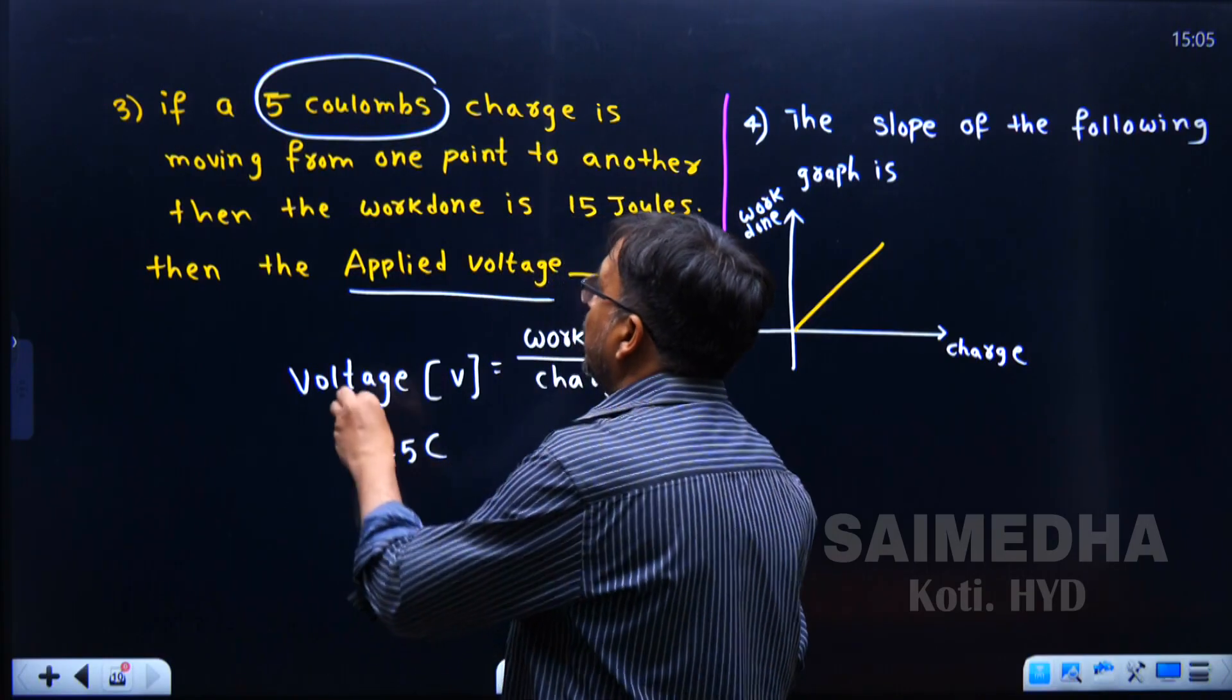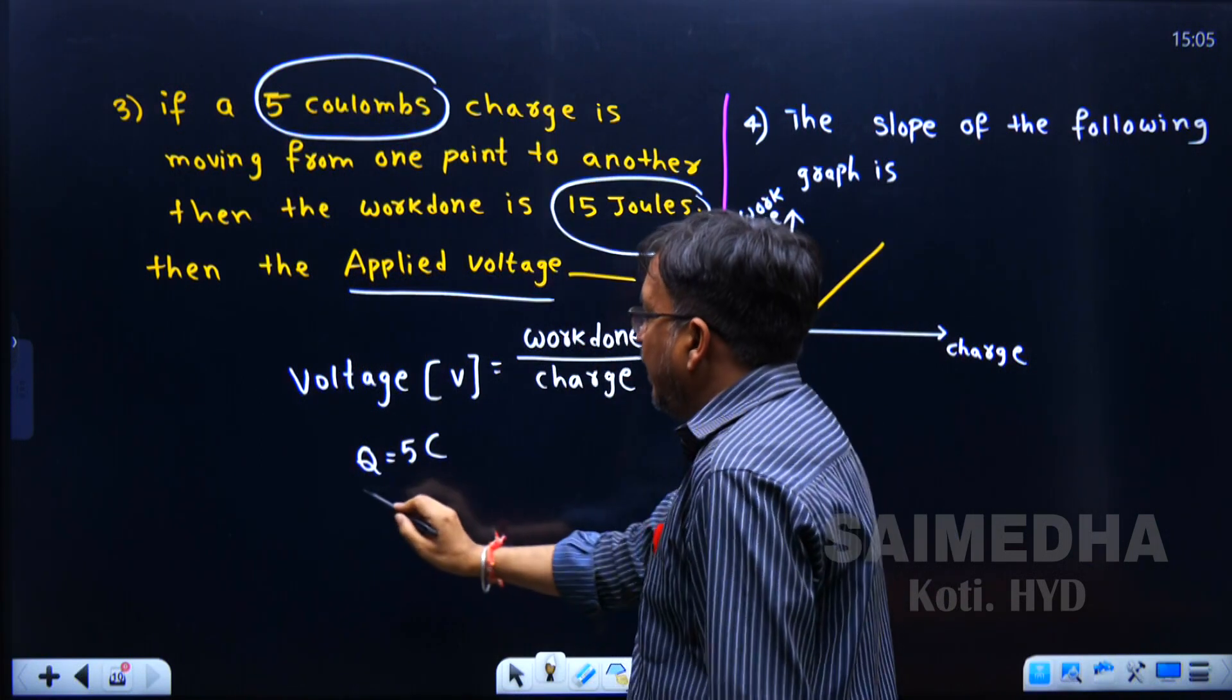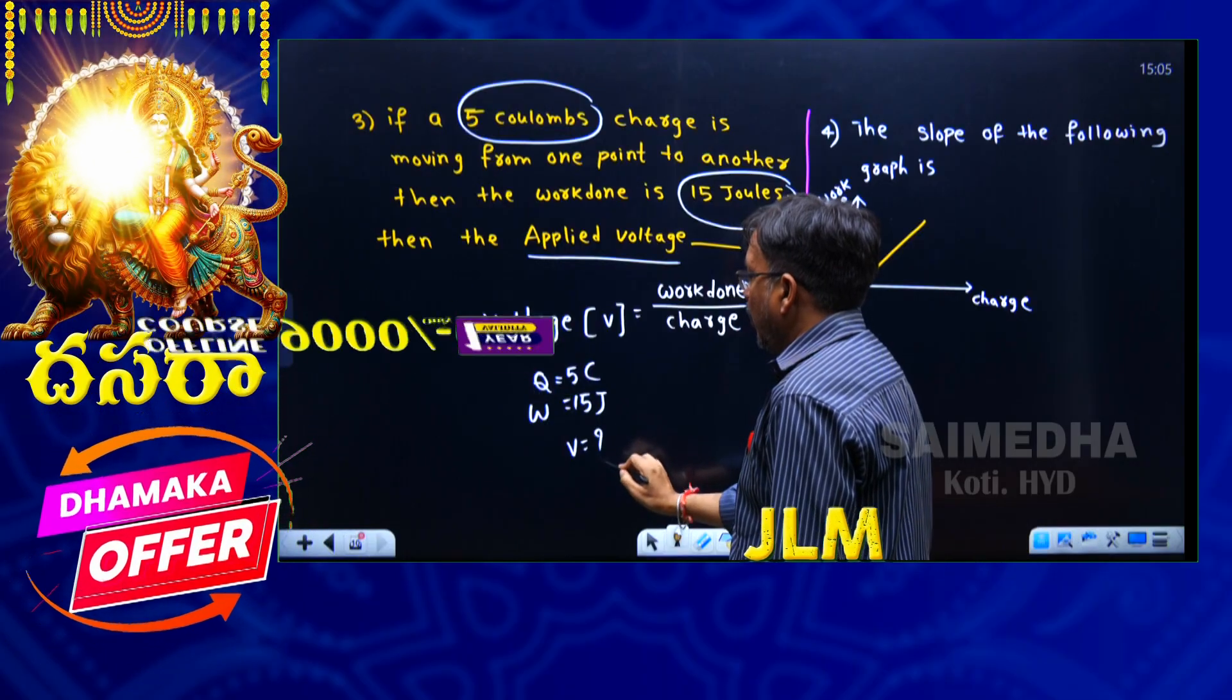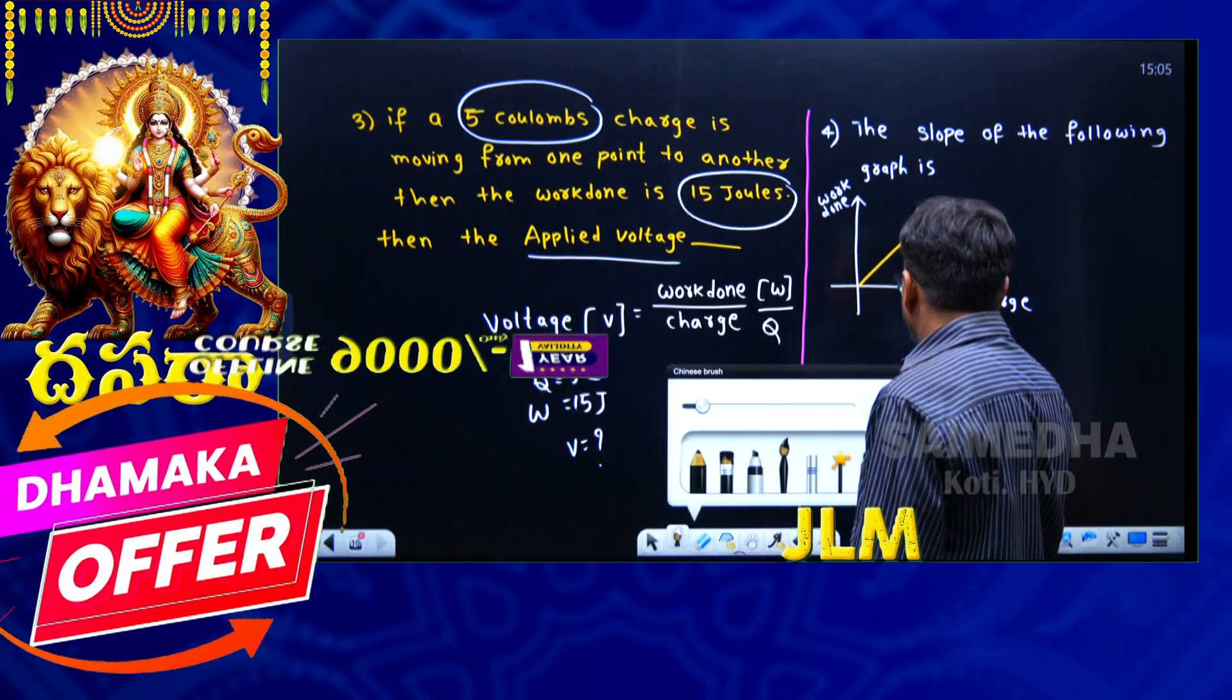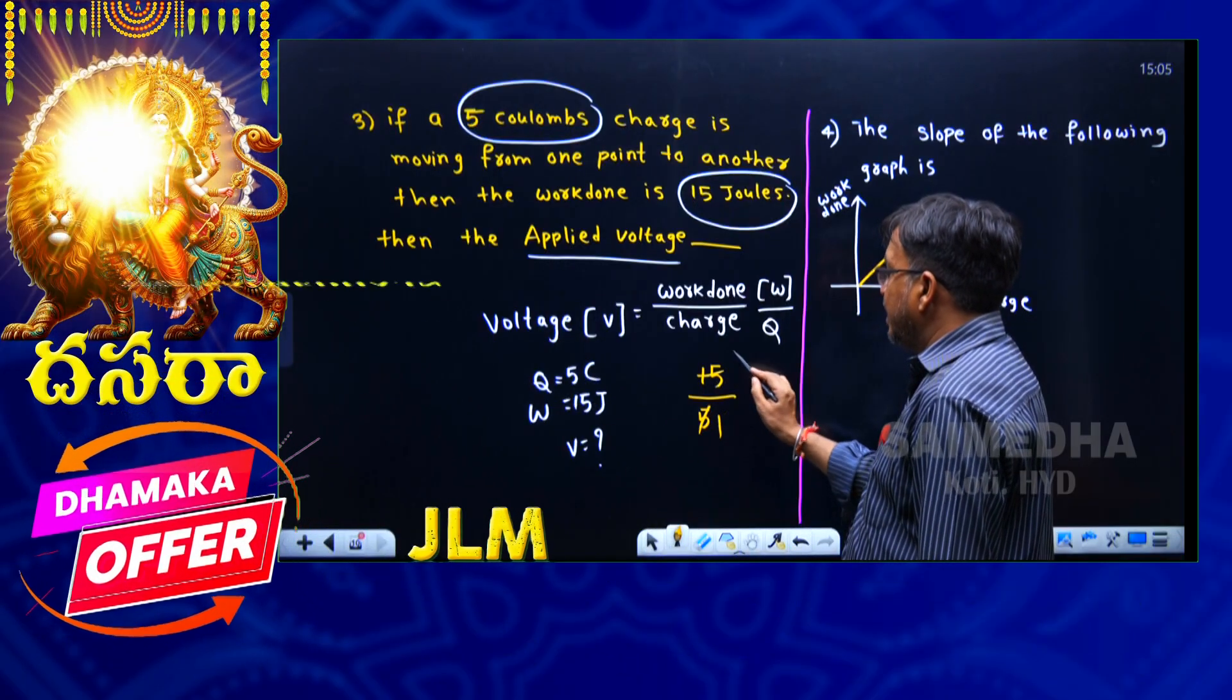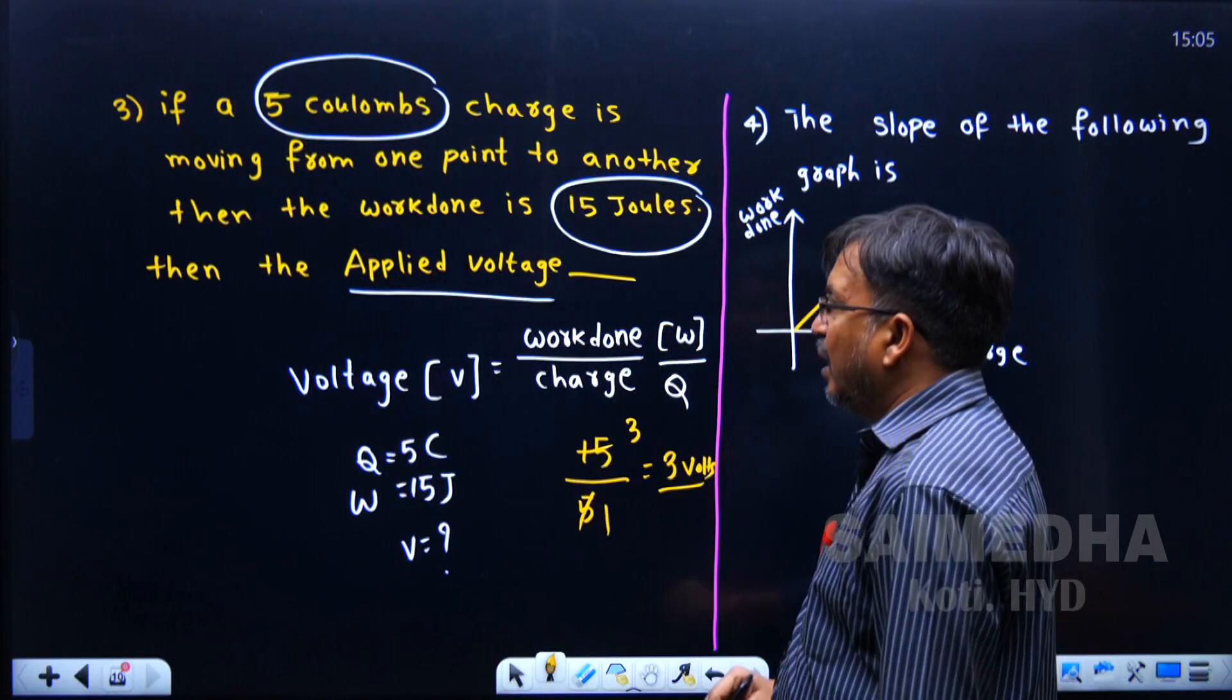So this 5 coulombs charge is moving from one point to another, work done is 15 joules. He is asking voltage, how much? Now I am substituting all this given data: work done 15 joules, charge 5 coulombs. So what is the answer? 3 volts is the answer.